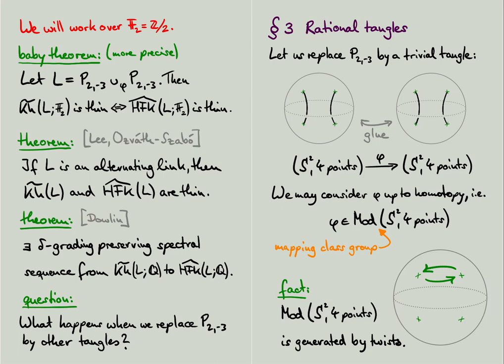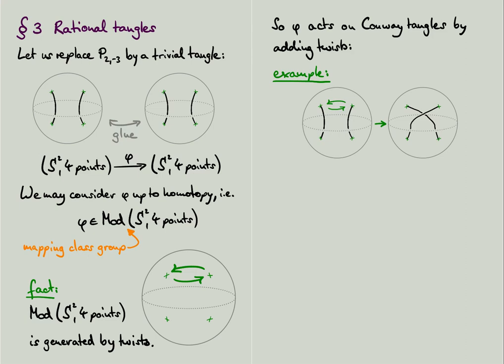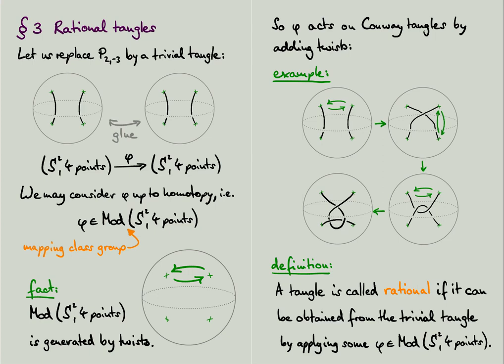In other words, we may regard phi as an element of the mapping class group of the 4-punctured sphere. It is well known that this group is generated by elementary twists of the punctures. So phi acts on Conway tangles by adding twists to the tangle ends. Let me illustrate this in the case of the trivial tangle. If we add a twist to the top two tangle ends of a trivial tangle, we obtain the one-crossing tangle. Adding another twist gives us a two-twist tangle, and another twist at the top gives a three-crossing tangle.